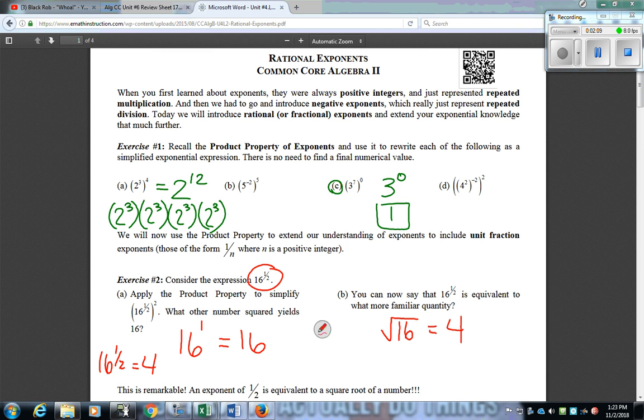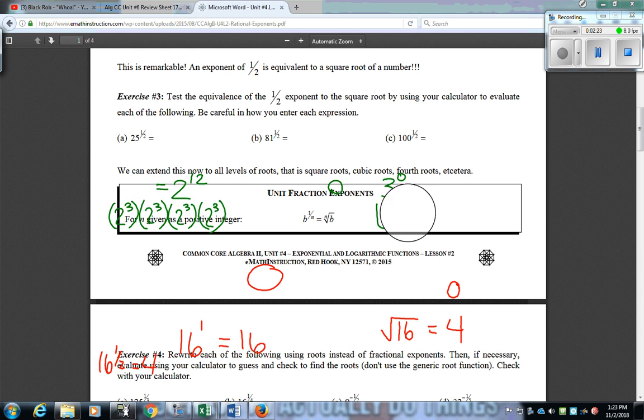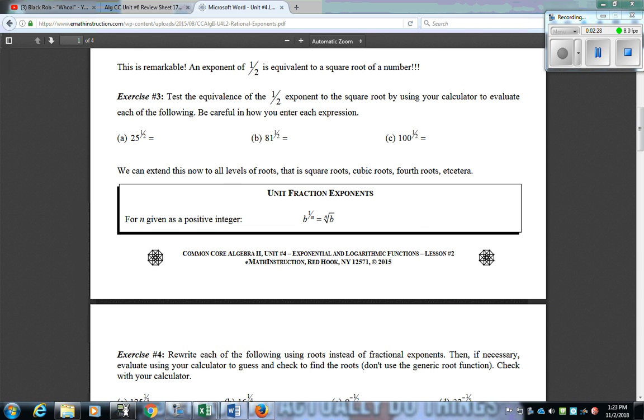So a fractional exponent like 1 half is the same thing as a square root. In the case of some other examples, for exercise 3, an exponent of 1 half is equivalent to the square root. If I have 25 to the 1 half power, it's the same as the square root of 25, which would be 5. And then for 81 and 100 to those powers, you get 9 and 10.